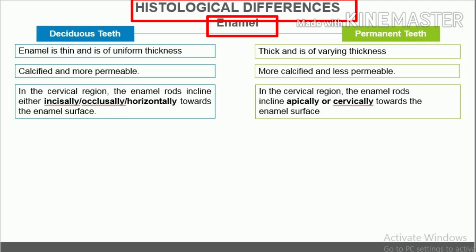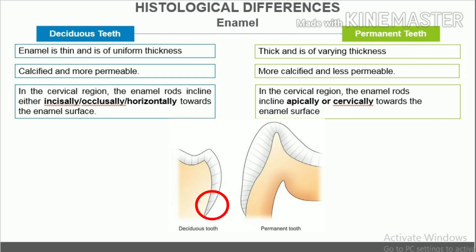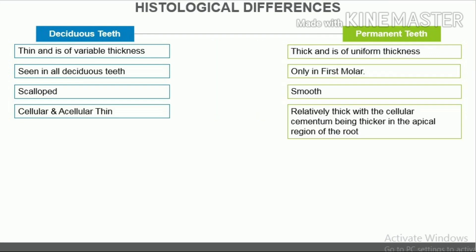Histologic differences. Enamel. In deciduous teeth, the enamel is thin and of uniform thickness covering the crown, is less calcified and more permeable. In the cervical region, the enamel is thin and of variable thickness, with increased thickness near the occlusal fossae area. In permanent teeth, the dentin is thick and of uniform thickness covering the crown.